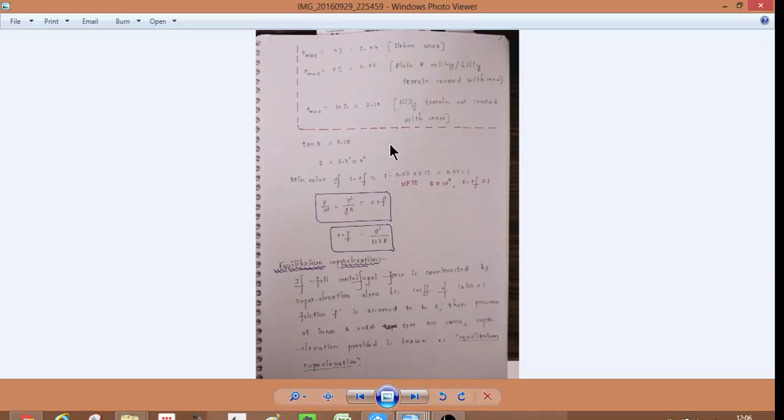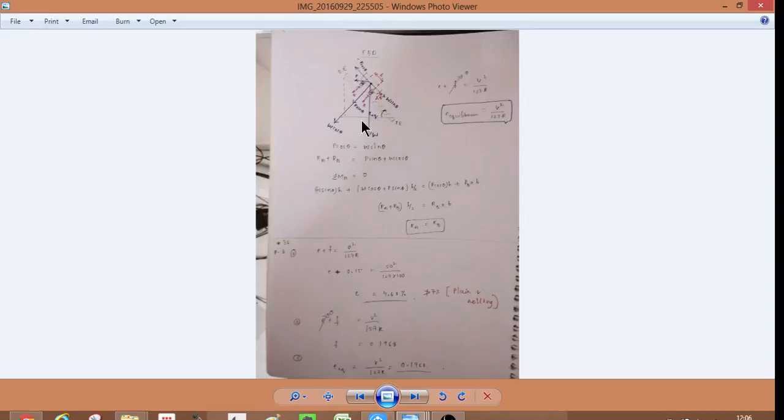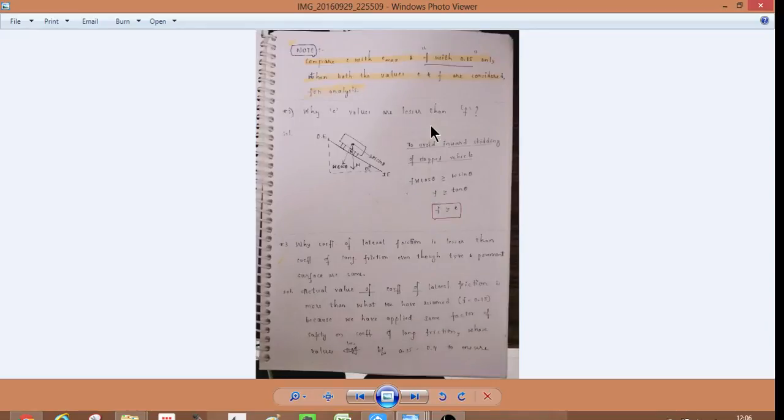So, E, this is the maximum value. E plus F is equal to V square 127R. So, what is equilibrium? If the friction is 0, then it is called equilibrium super elevation. Compare E with E max. And F with 0.15. The value which is 0.15 only admitted. So, both values of E and F are considered for analysis.